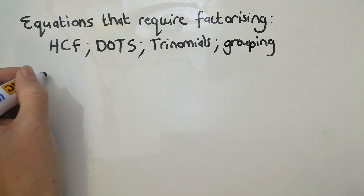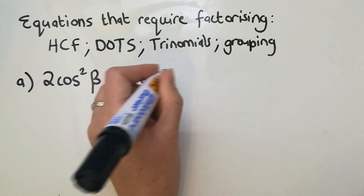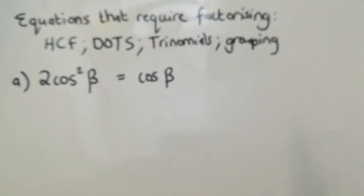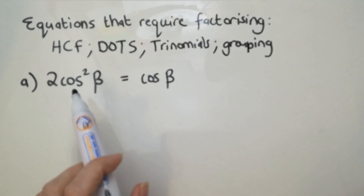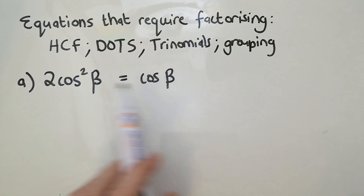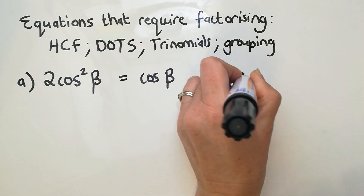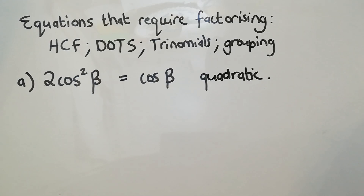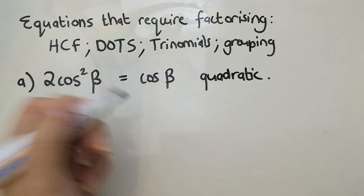In my first example, you'll see what I mean by it feels like there's nothing you can do. There's a cos squared that equals cos beta. You might think about dividing by cos beta, but that will limit your answers — just like with quadratic equations, you can't divide by a variable because it eliminates one of your answers. Since there's a square in it, it's quadratic, so you'll need to factorize and expect four answers, because a normal trig equation gives two, and with a squared term you get two sets of two.